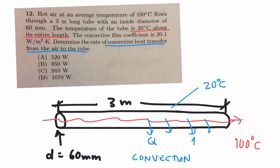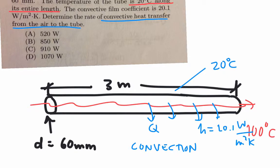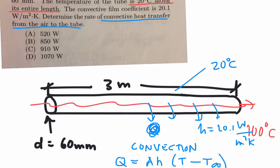We know that H is given as 20.1 watts per meter squared kelvin. They're asking us to determine the rate of convective heat transfer. We know from our work that the convective heat transfer is equal to A times H times (T minus T infinity). In this problem, one of the clues is that the temperature is 20 degrees C along its entire length. They don't tell you if it's the inside or outside of the tube — they just say 'of the tube.'